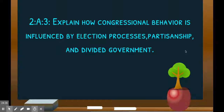Objective 2A3: explaining how congressional behavior and policy making is influenced by election processes, partisanship, and divided government. Let's break that down — what Congress members do is based on election processes, meaning being re-elected and running for election. How is behavior changed by partisanship? Divided government is what partisanship essentially means — each party is isolated from each other, and divided. How do you ever get anything done? How do you govern?